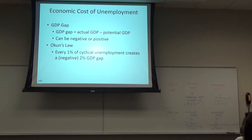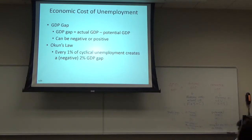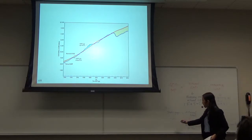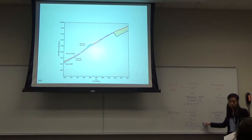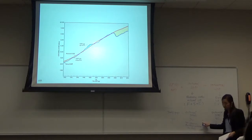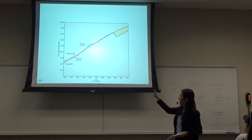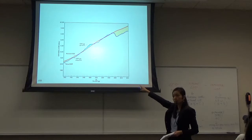Looking at the next slide: the GDP gap, when it's negative, means you have cyclical unemployment and you're not reaching your potential. But you can also have a positive GDP gap, meaning the economy is overheated.